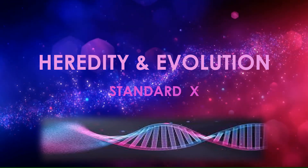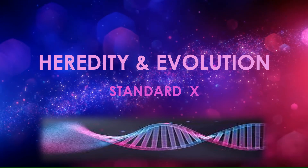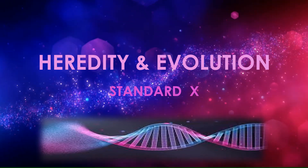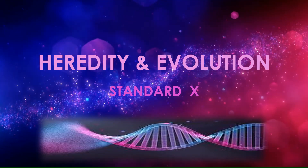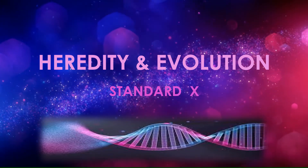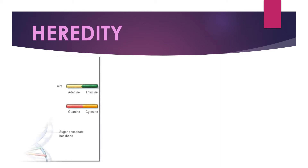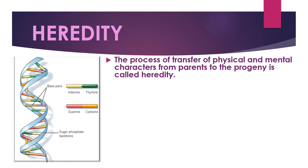In this chapter on Heredity and Evolution, you will acquire knowledge about heredity and the various evidence put forward to prove the process of evolution, especially of human beings. The process of transfer of physical and mental characters from parents to the offspring is called heredity. It is the transfer of biological characters from one generation to another via genes.